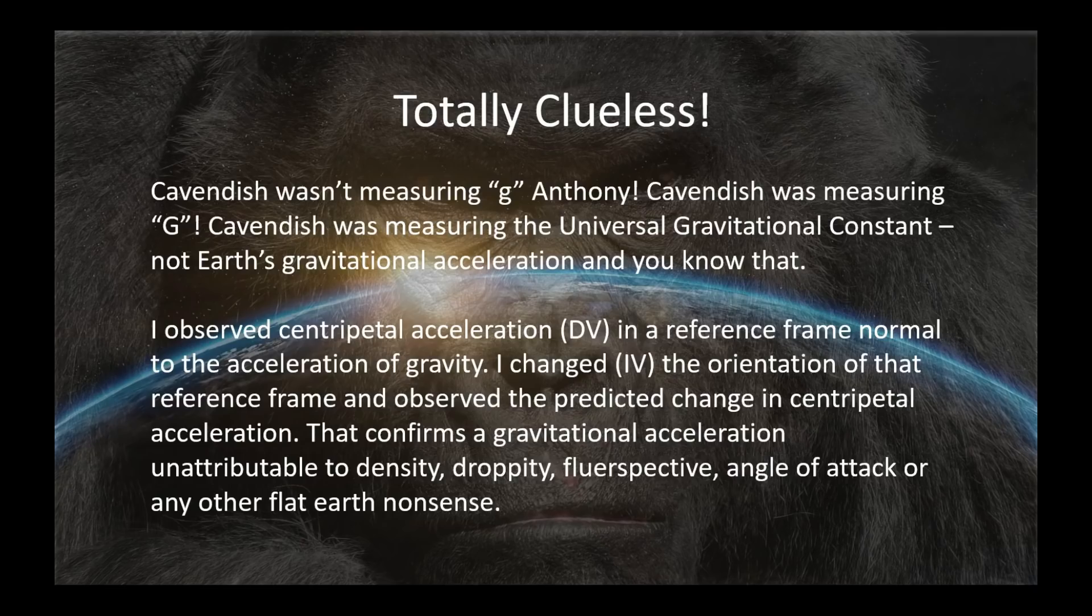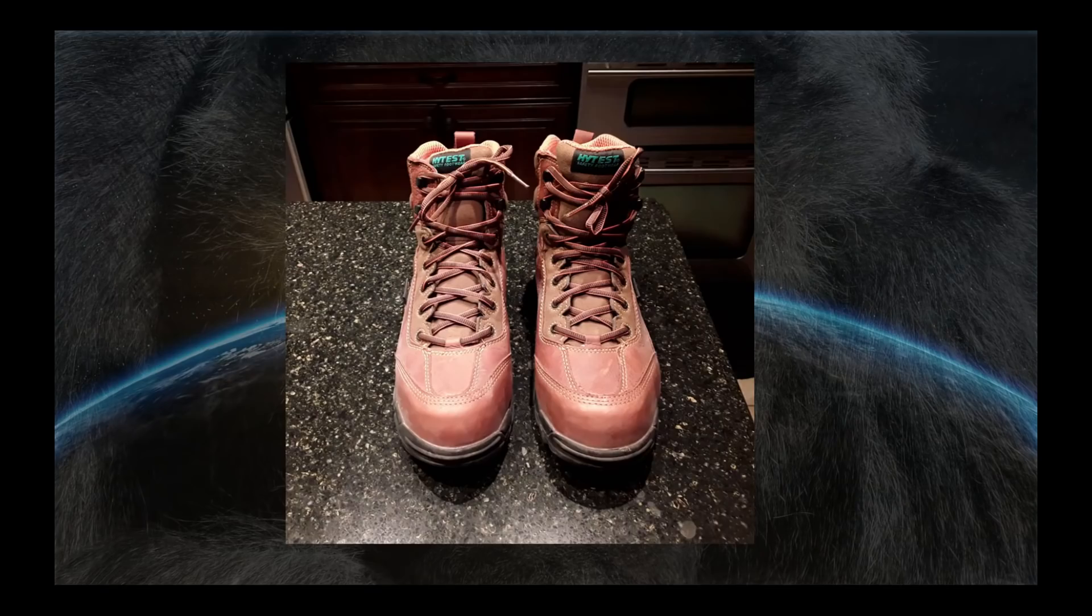Now look, I observed centripetal acceleration, the dependent variable, in a reference frame normal to the acceleration of gravity. I changed the independent variable, the orientation of that reference frame, and observed the predicted change in centripetal acceleration. That, my friend, confirms a gravitational acceleration unattributable to density, droppity, fluorspective, angle of attack, or any other flat Earth nonsense. And oh, by the way, I can tie my own shoes. And believe me, if one of those things catches you in the back side, it's going to leave a mark.